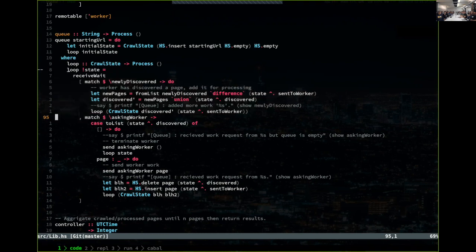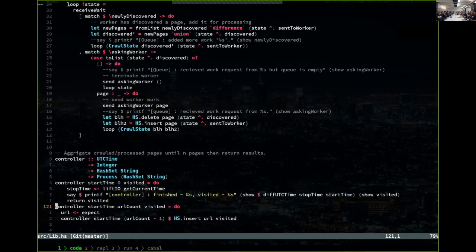With the controller, if we hit our goal of the number of URLs crawled, it will basically terminate this whole process. That's what the code looks like.